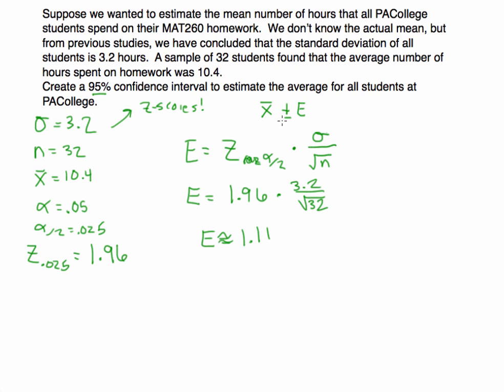That's what we're going to add and subtract from the sample mean. So if I take the sample mean and subtract the margin of error, and then I take the sample mean and add the margin of error, I'm going to get my upper and lower bound. Here I'll have my sample mean was 10.4 hours, and I'm subtracting that 1.11, and here I'm taking 10.4 and adding 1.11. When you subtract 10.4 minus 1.11, you get 9.29, and when you add 10.4 and 1.11, you get 11.51.